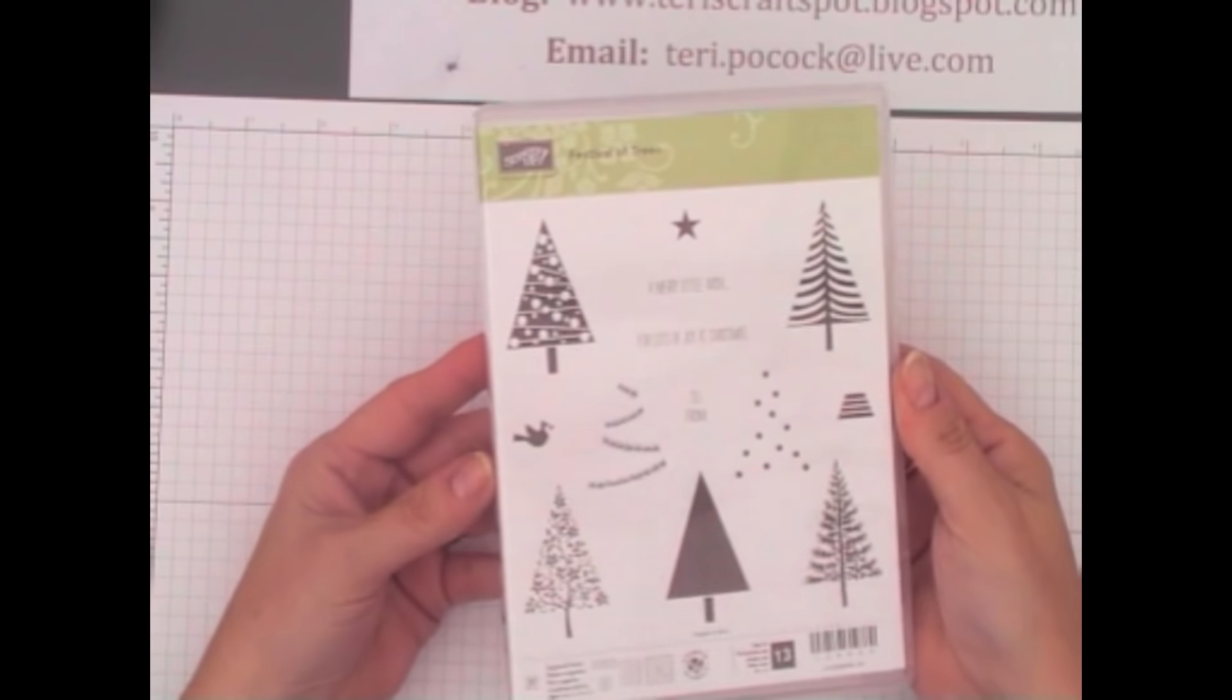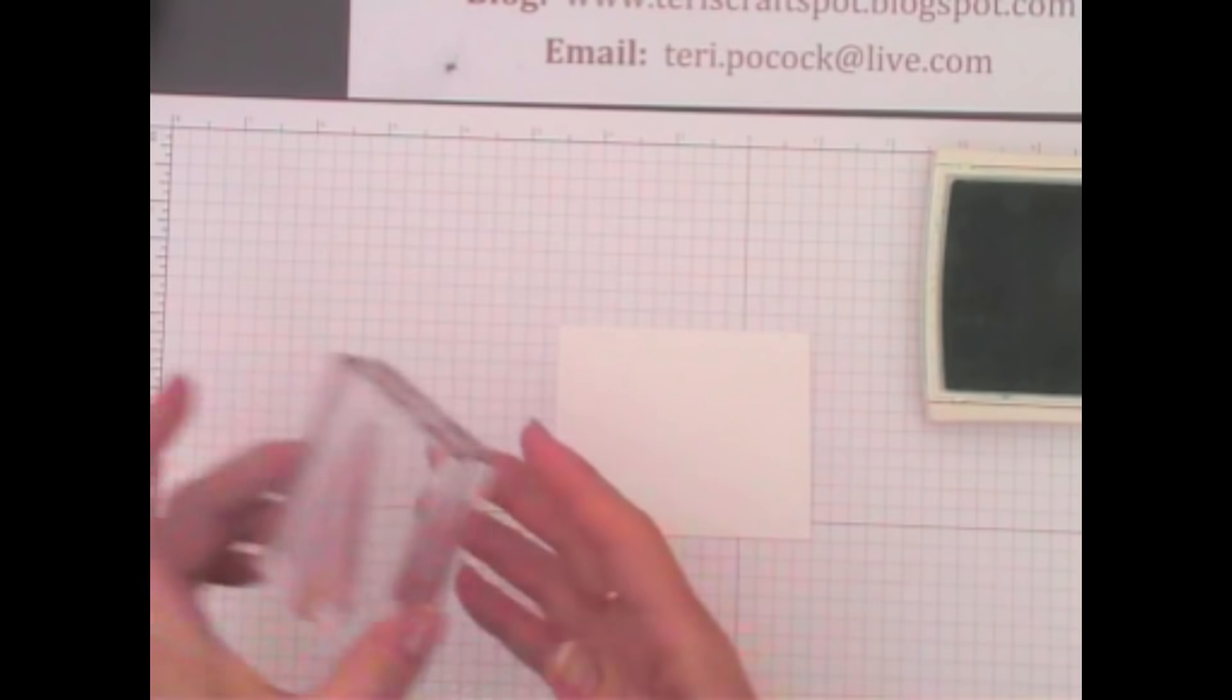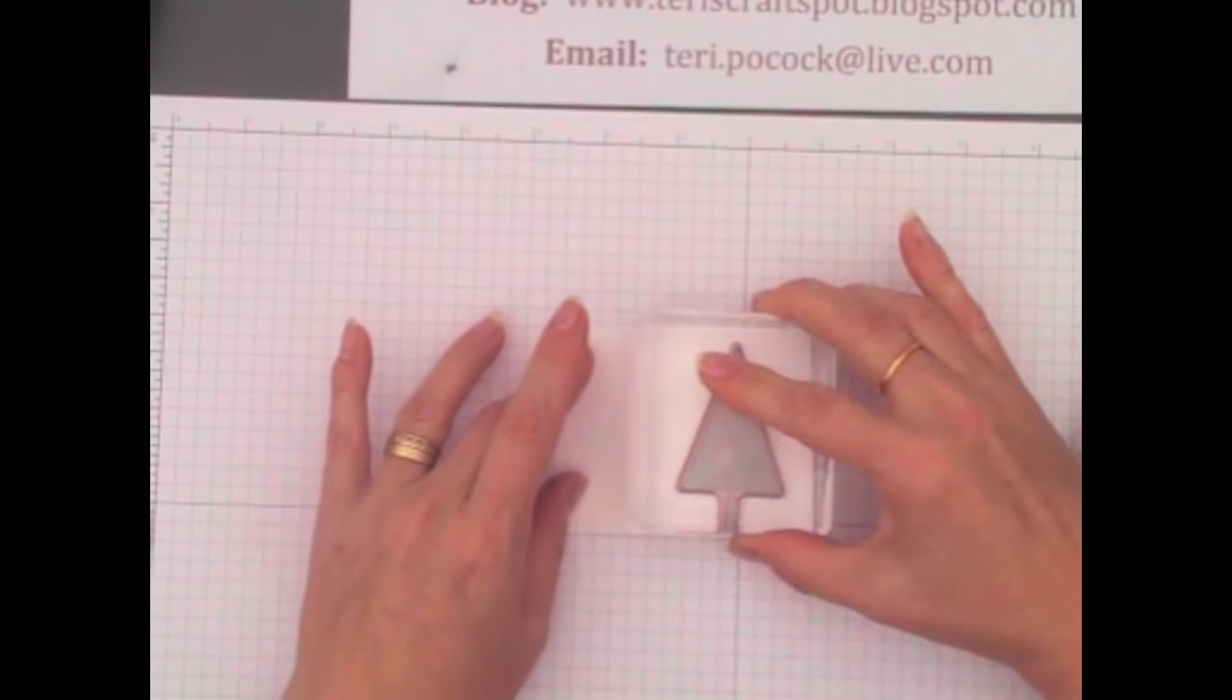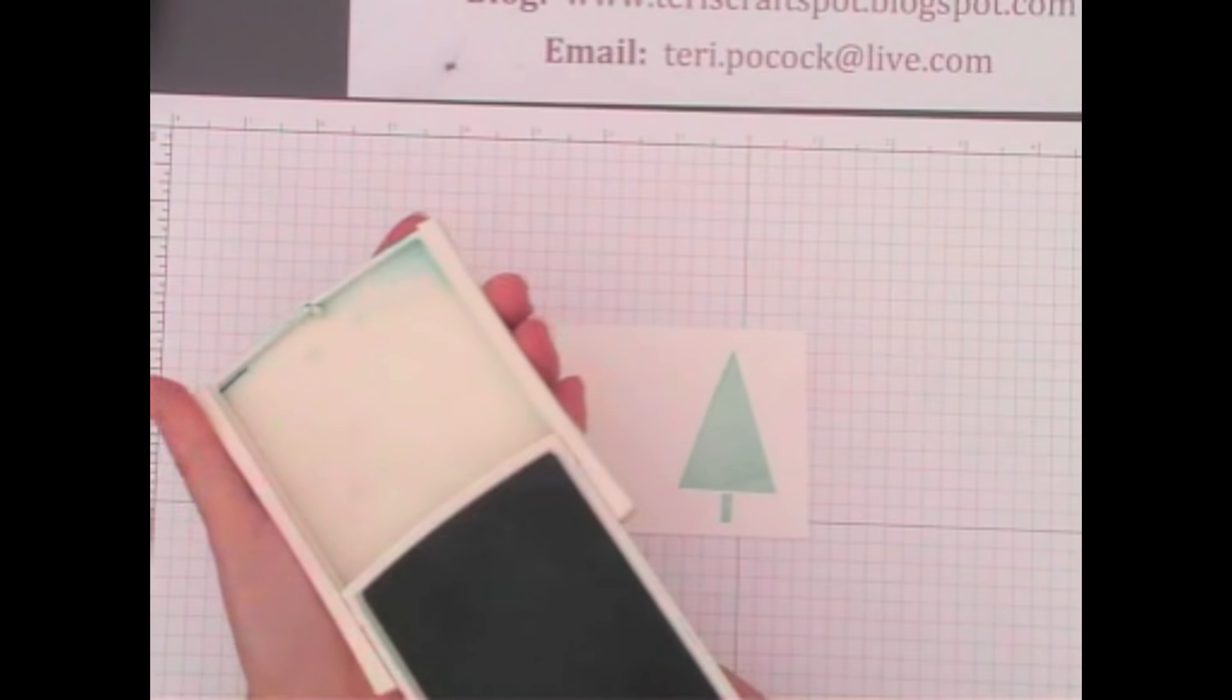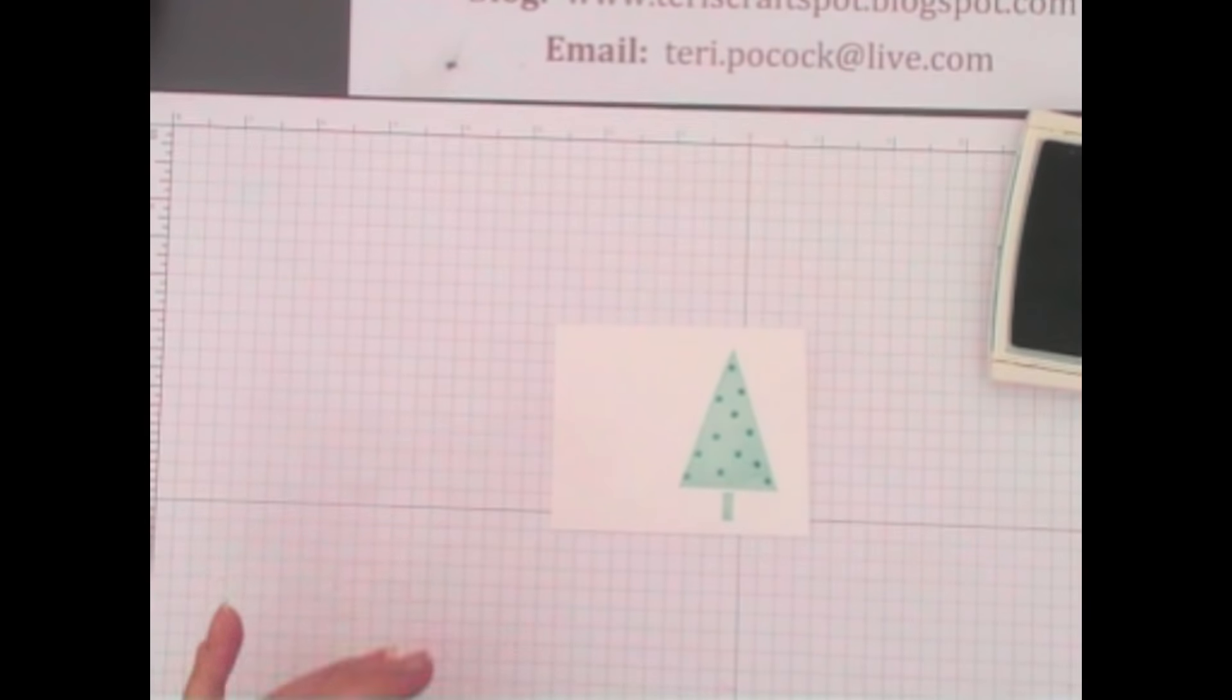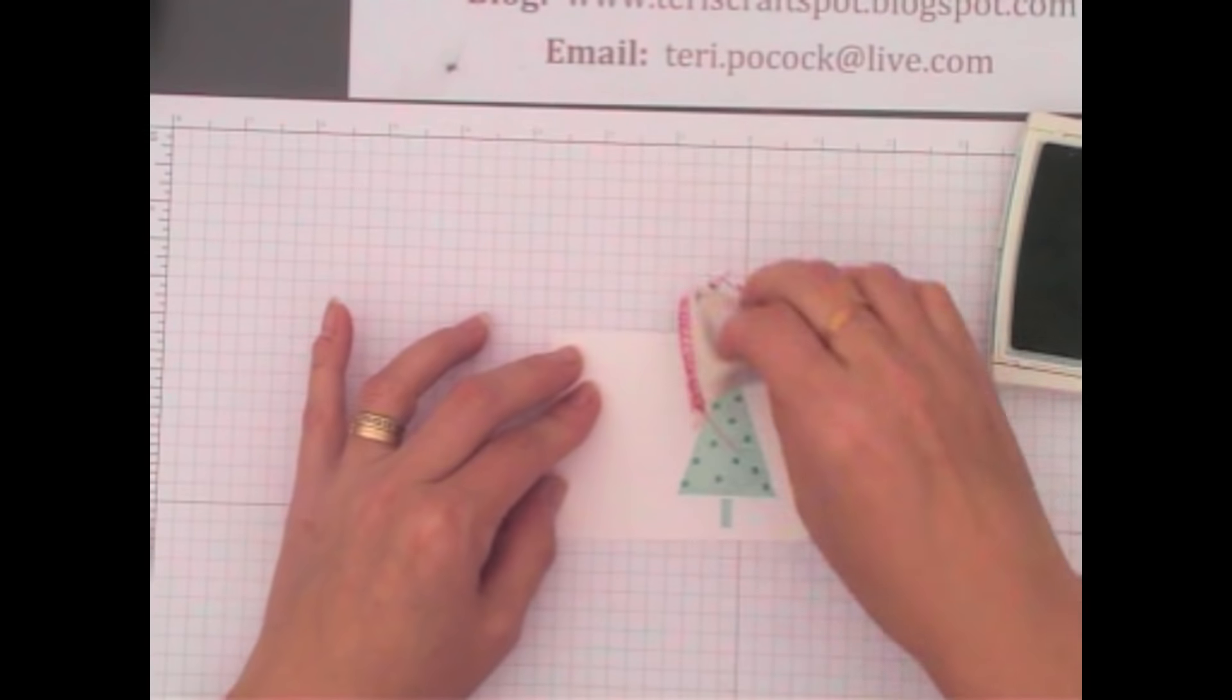I'm using the Festival of Trees Photopolymer stamp set to do my decoration. And I'm going to stamp my plain tree first of all in Pool Party. And then I'm going to stamp the dots using Bermuda Bay. Give that a second or two to dry. And then go over with my embossing buddy to remove any static.